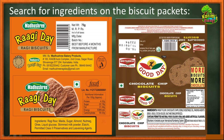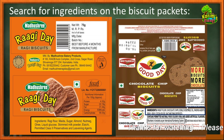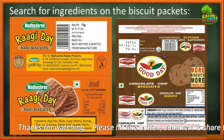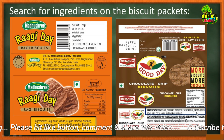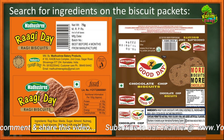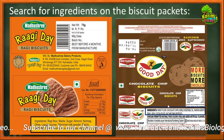Now let's look at the Good Day biscuit packet — the one you love most. On the wrapper you can see the company's logo, price, manufacturing date, and the product name. This is a chocolate variety — you can see chocolate chips on it. And here, in this area, you can find the ingredients: wheat flour, chocolate chips, edible vegetable oil, rising agents, and so on. So that's about the ingredients on packaged food items.